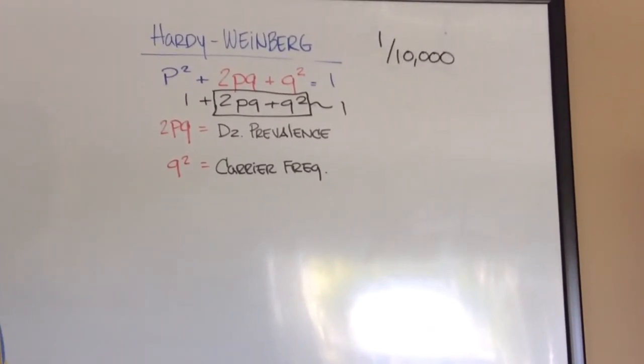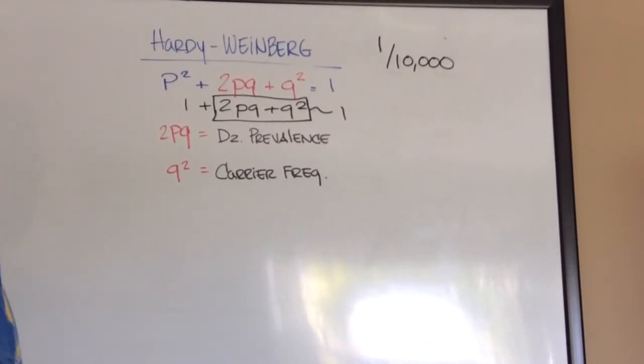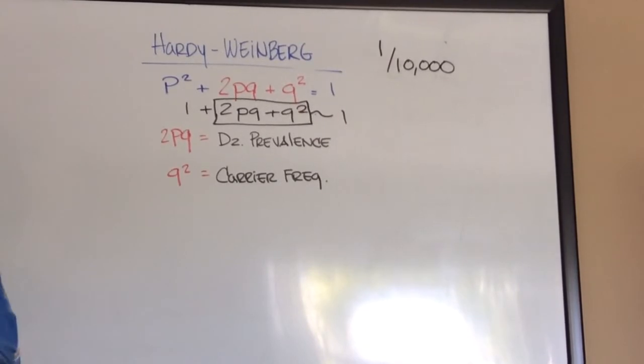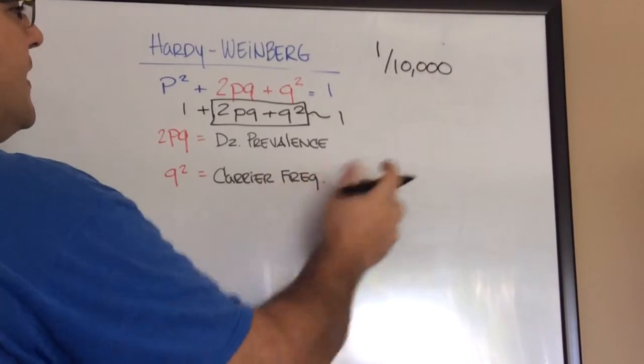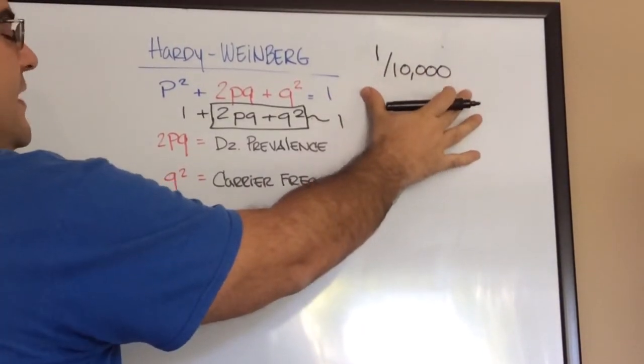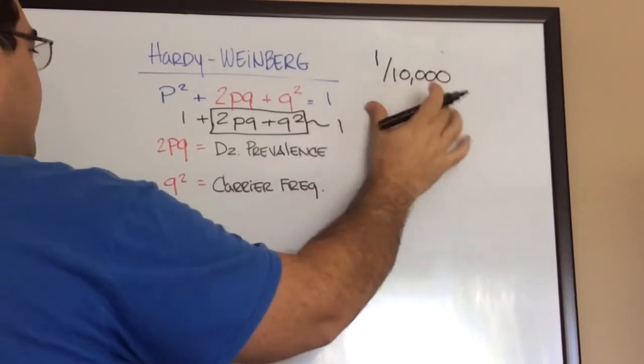And you're asked to calculate for the carrier frequency using the Hardy-Weinberg Equilibrium. What is the carrier frequency of this disease? Well, it comes down to this. They give you, in the vignette, they'll give you this number. And with this number, you'll work with it. So at 10,000, step one is to do a square root of 10,000.